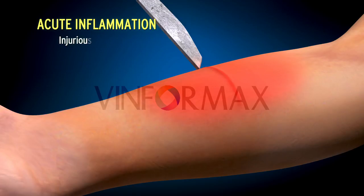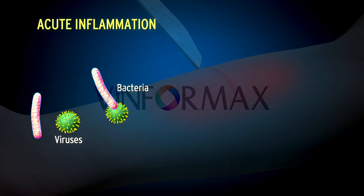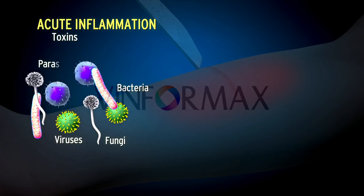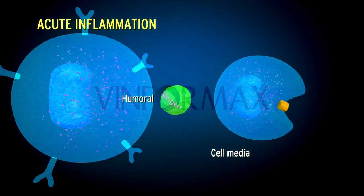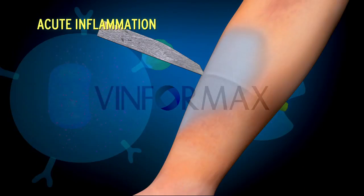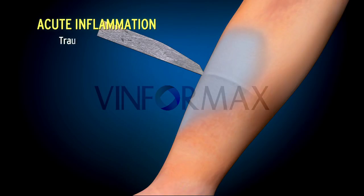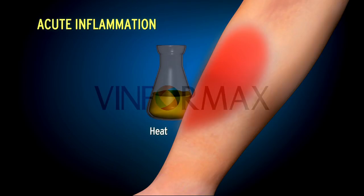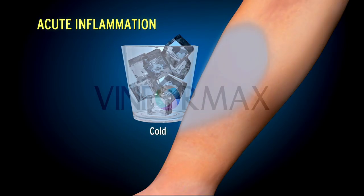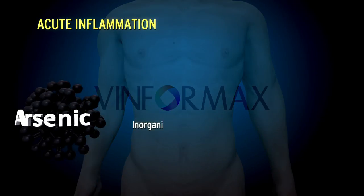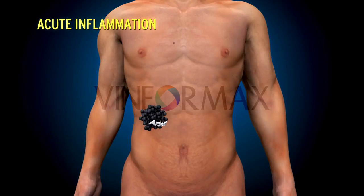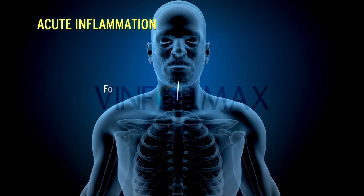The offending or injurious agent may be classified as follows: infective agents like bacteria, viruses, other toxins, fungi, and parasites; immunological agents like humoral and cell-mediated reactions; physical agents like mechanical trauma, heat, cold, etc.; chemical agents like organic and inorganic poisons; and inert materials like foreign bodies.